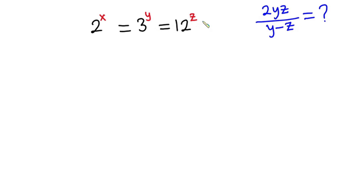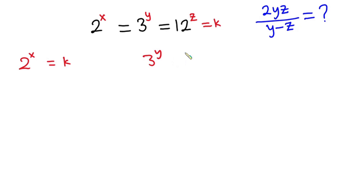Now let's get started. I'm going to set everything equal to a certain constant k. So it means that 2 to the power x is equal to k, 3 to the power y is also equal to k, and lastly 12 to the power z is also equal to k.